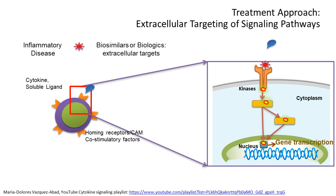When we use biosimilars or biologics, what they do is physically block either the receptor or the soluble cytokine. IL-17 is a very good example of how extracellular biologics work: by binding with an antibody to the receptor on the cells so the circulating cytokine cannot engage and there's no signal, or by binding the soluble cytokine directly so it cannot engage the receptor — with the same effect. That is the example of biologics using the IL-17 pathway.